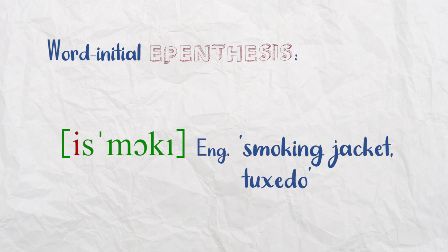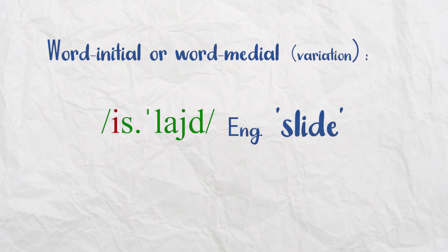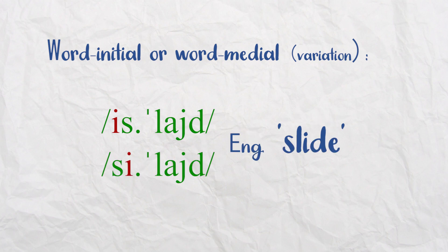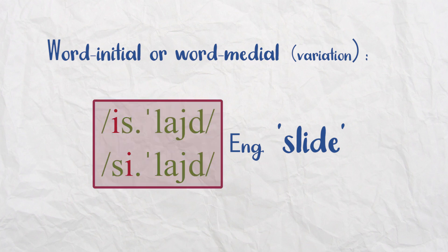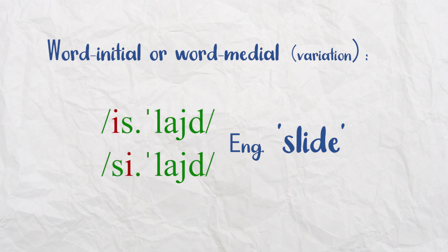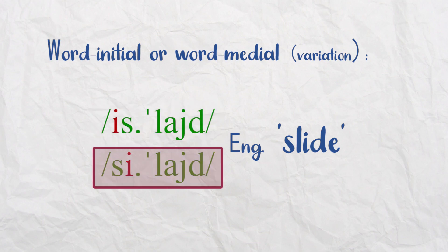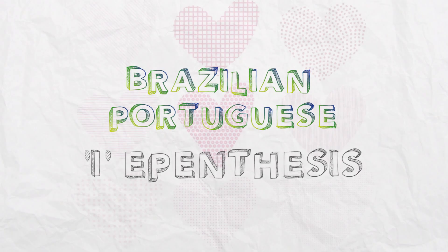'Smoking' becomes 'ismoque,' which is the word for tuxedo. The word 'slide' becomes 'islide' — or some people say 'islide.' Again, you have an E insertion. In the case of 'slide' you have two variants: in both, you're epenthesizing E, but in one the epenthesis is word-initial and in the other it is word-medial. Both variants are common in Brazilian Portuguese. You can already see that Brazilian Portuguese has a tendency for E insertion — E epenthesis — and it's a very common thing.